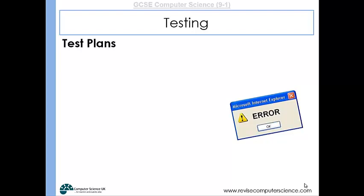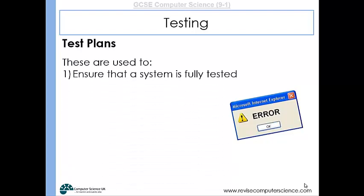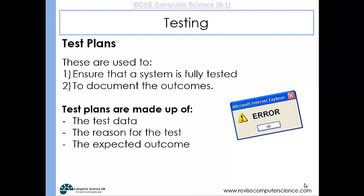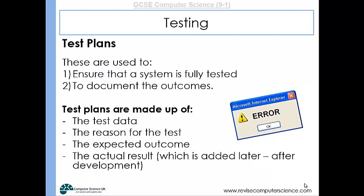Now, when it comes to black box testing, a test plan is often a really useful method of doing that. They ensure that systems are fully tested and they document all of the outcomes. Now, what a test plan is made up of is test data, the reason for the test, the expected outcome, and then the actual result, which we can then compare with the expected.